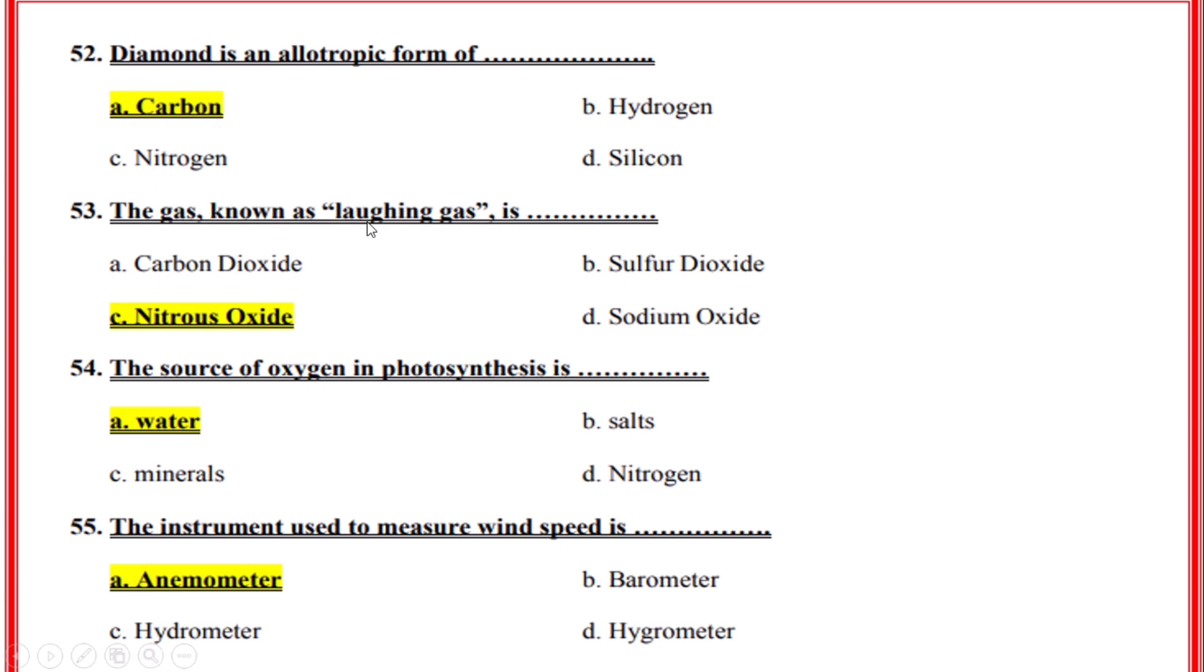The gas known as laughing gas is? Correct option: C, Nitrous oxide. The source of oxygen in photosynthesis is? Correct option: A, Water. The instrument used to measure wind speed is? Correct option: A, Anemometer.